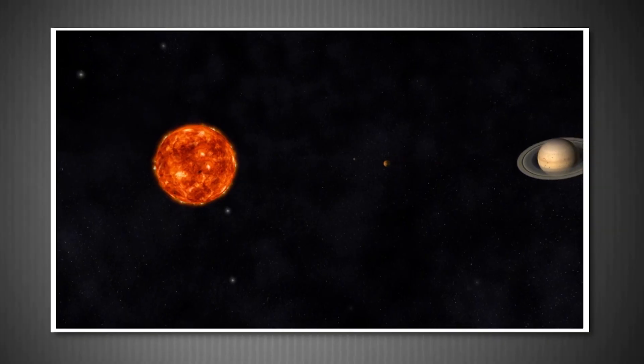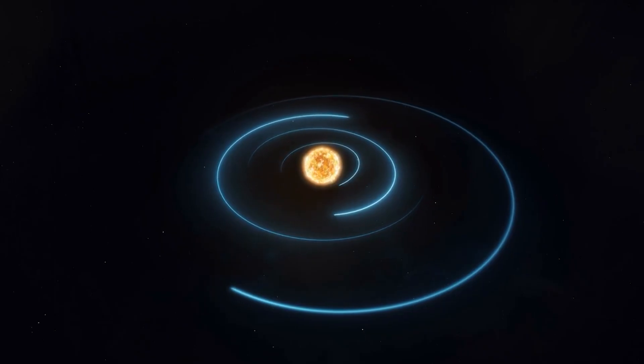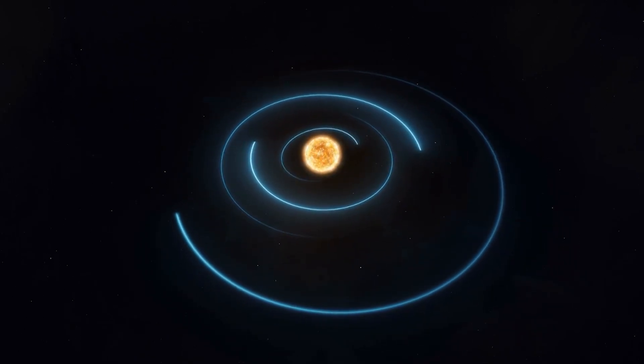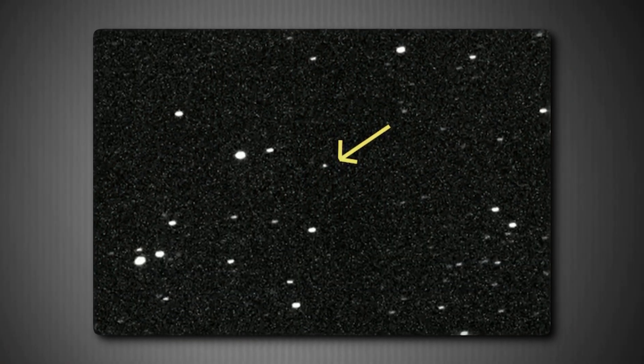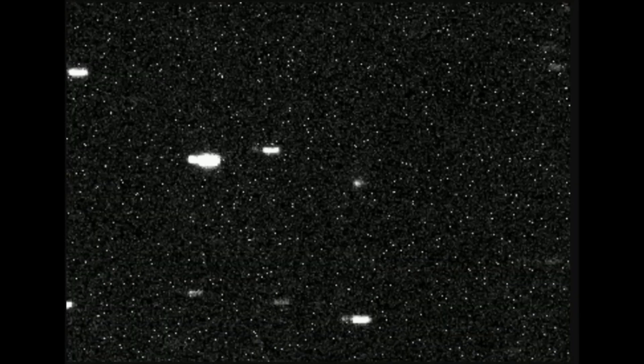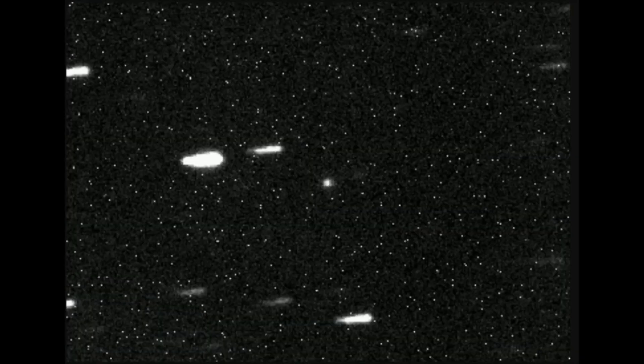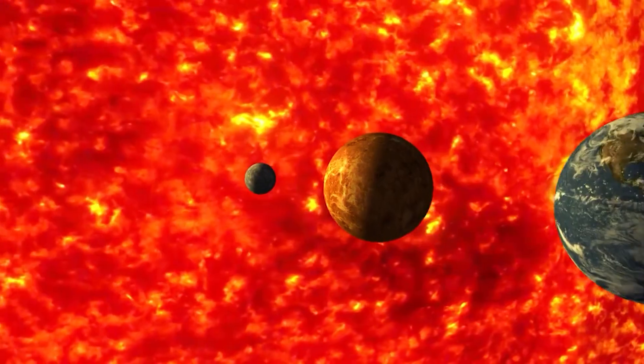As it approaches the sun, it's accelerating even more. To put this in perspective, that's roughly 180 times faster than a speeding bullet. This extreme velocity tells us something profound. This object has been traveling through interstellar space for an incredibly long time. University of Oxford astronomer Matthew Hopkins analyzed its trajectory and composition, and his conclusion was staggering. 3I ATLAS might be more than 7 billion years old.